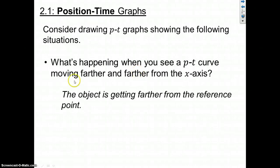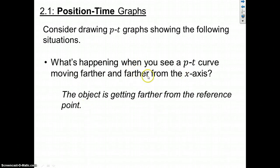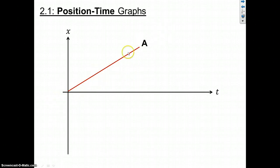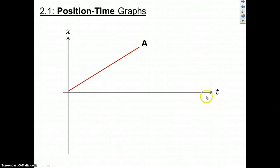Let's say we have a graph - here's the first scenario we're going to evaluate. There is our curve inside the XT graph, that's the XT curve for some object A. The first thing you ask yourself is: what's happening to the slope here? The reason we ask this is because the slope of an XT graph has a very important physical meaning - the slope of an XT graph is the velocity.